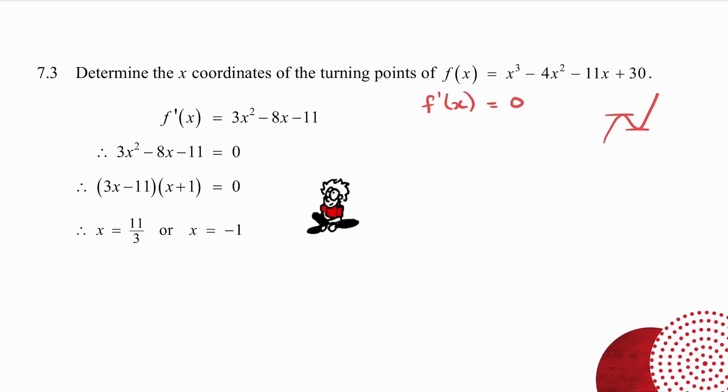So I get the derivative of f of x. And I make it equal to 0. That is now a quadratic equation. So factorize the trinomial. And you get two x-values. And they only asked you for the x-coordinates. So I stop there. Because I've got the two x-values at the turning points. So there's a quadratic equation being used in calculus.